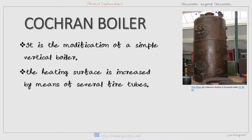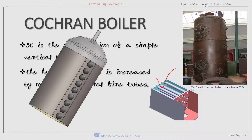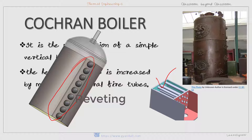There are many horizontal fire tubes inside the boiler cell. The boiler cell is made of steel plates in a cylindrical form and it is riveted or welded together. Both ends of the cell are closed by end plates.